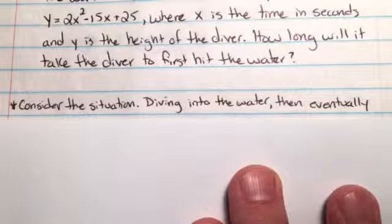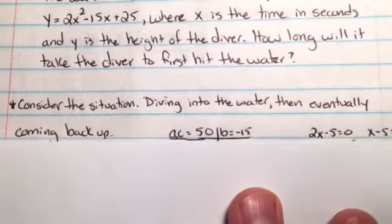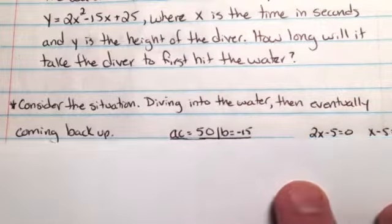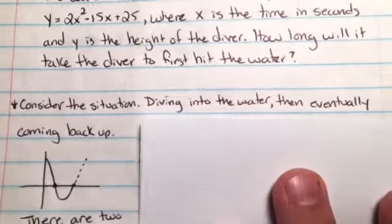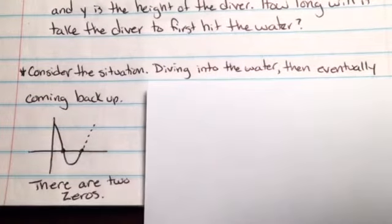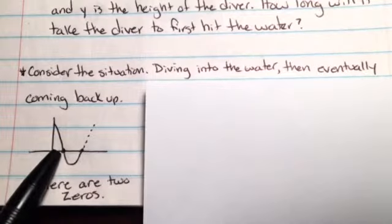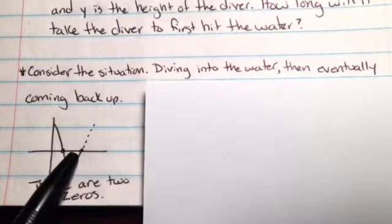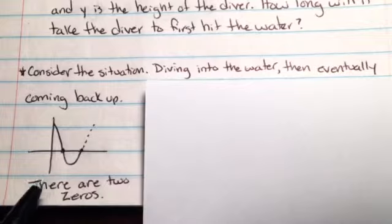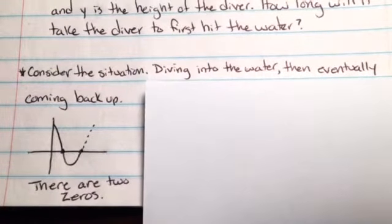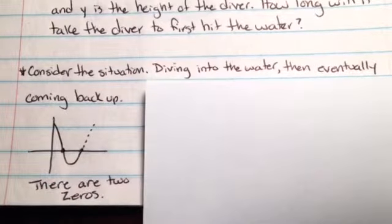Consider the situation, diving into the water and then eventually coming back up. I want you to take a look at this diagram here. Imagine that a diver was on a diving board. They dive, they hit the water, they go under, and then they start to come back up. I drew a dotted line here because the diver's not going to come flying out of the water. So here's the situation, what it looks like as a parabola.